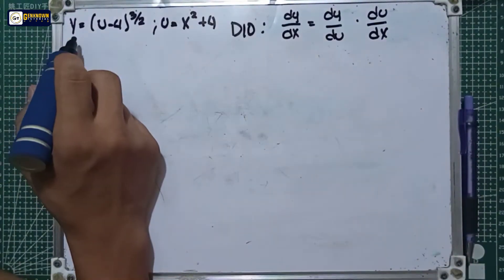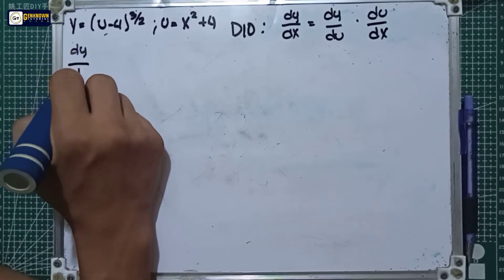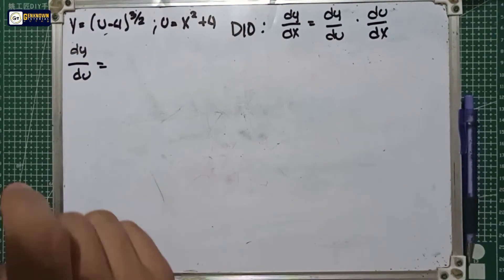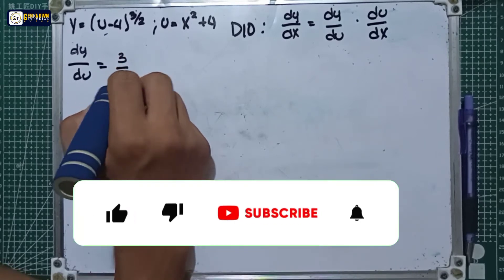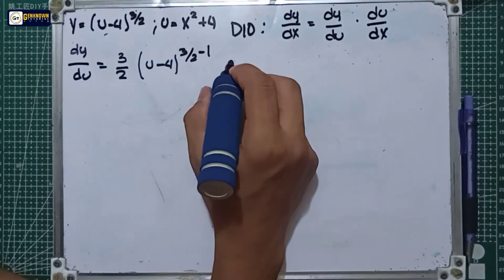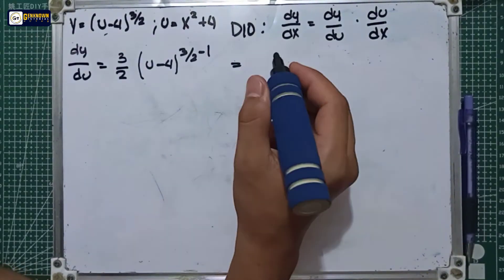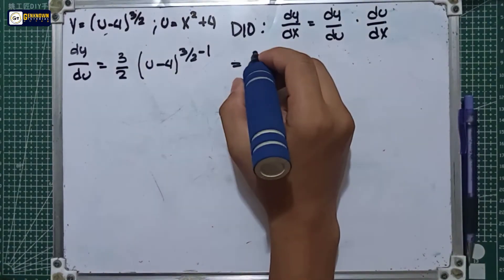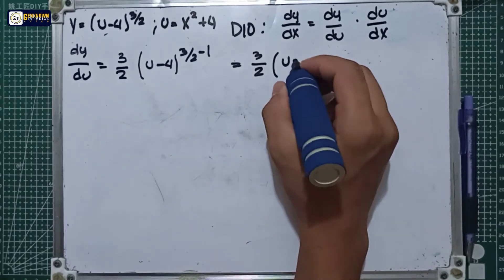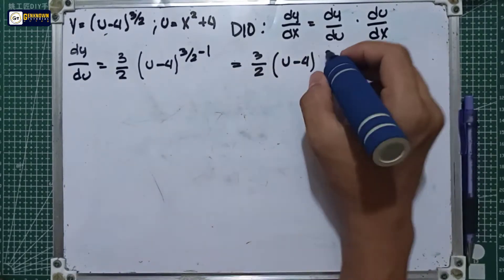For the y equation, we will derive this with respect to u. So dy over du is equal to the derivative of u minus 4 raised to 3 over 2. We will use the power rule here, so that is equal to 3 over 2 multiplied by u minus 4 raised to 3 over 2 minus 1, multiplied by the derivative of u minus 4, which is 1. So dy over du equals 3 over 2 times u minus 4 raised to 1 over 2.